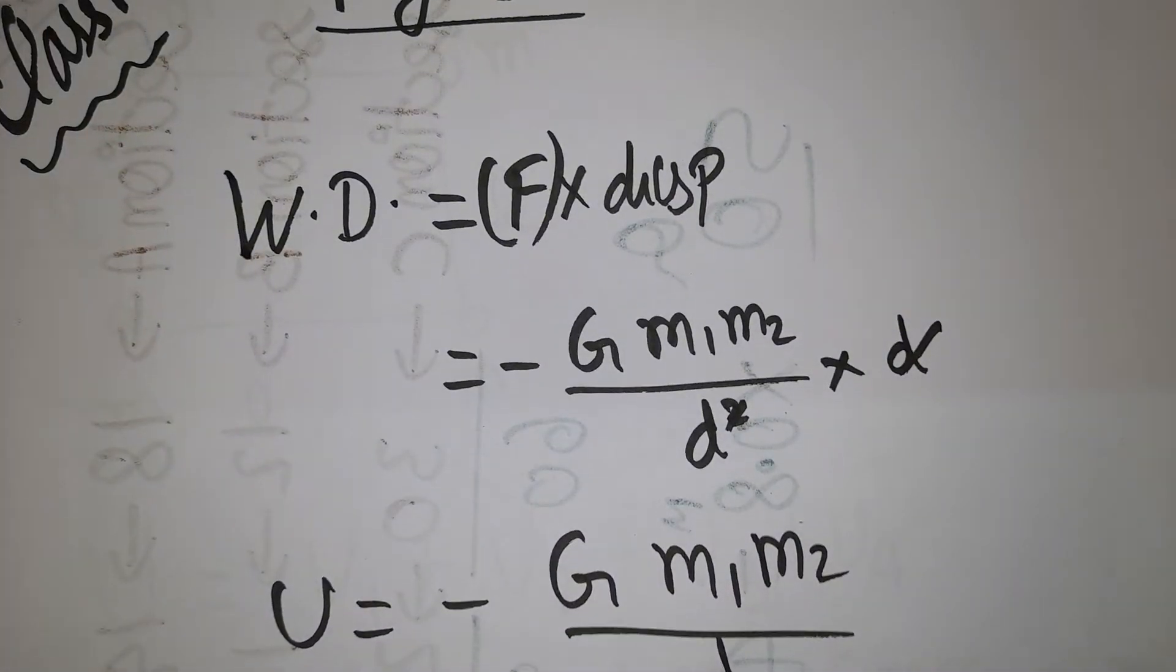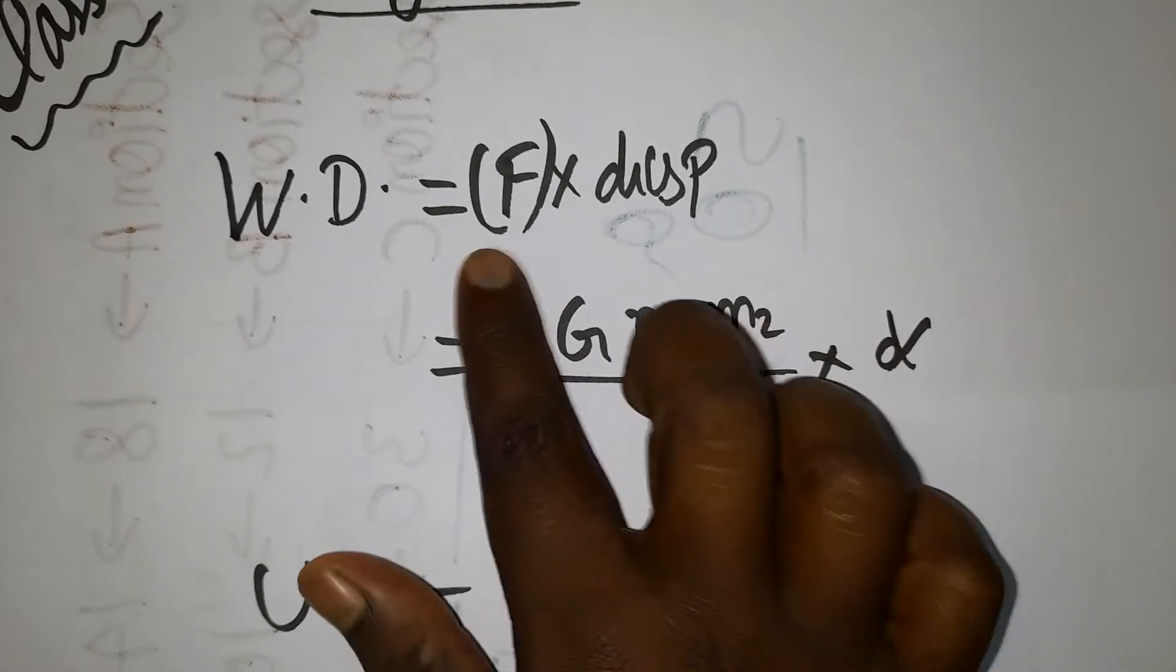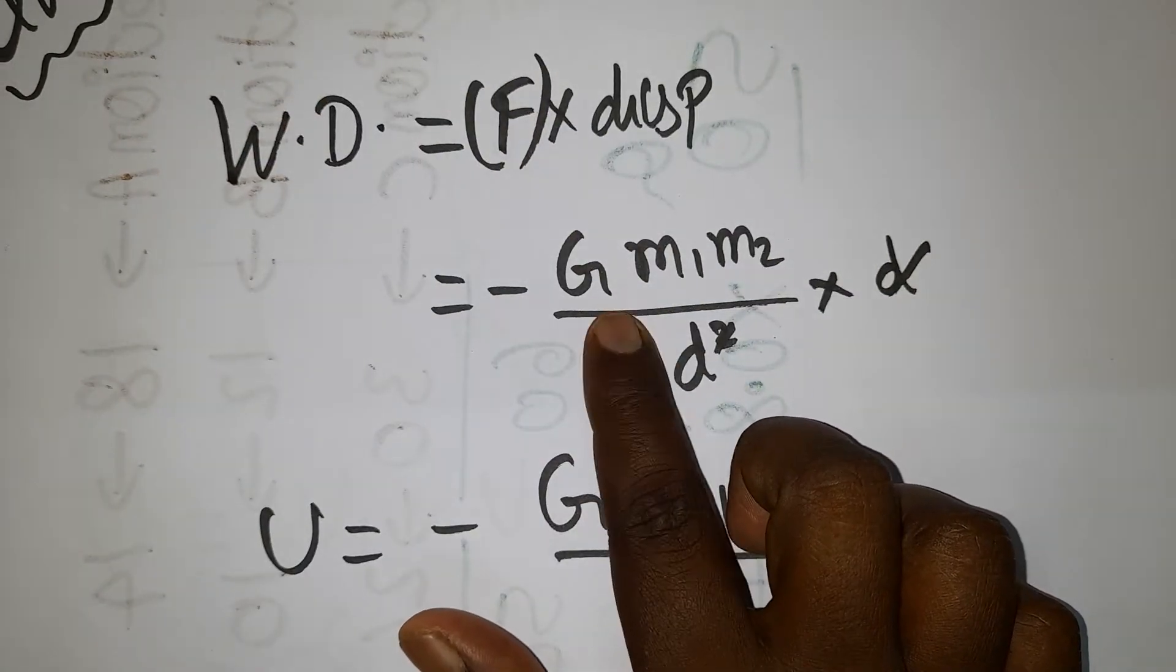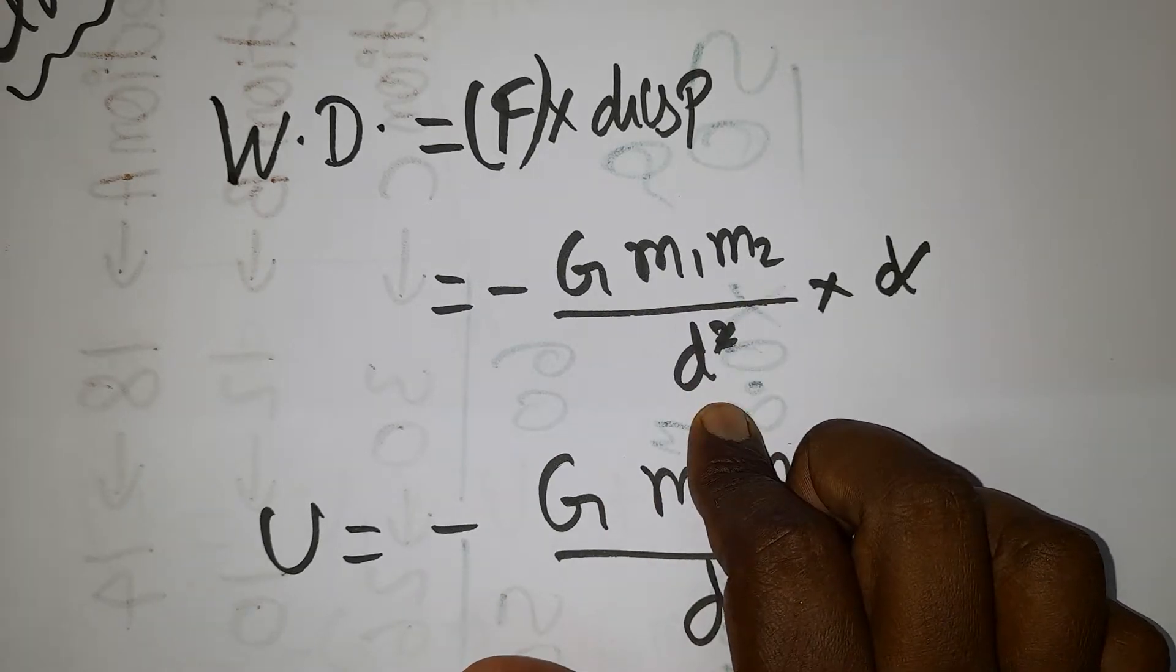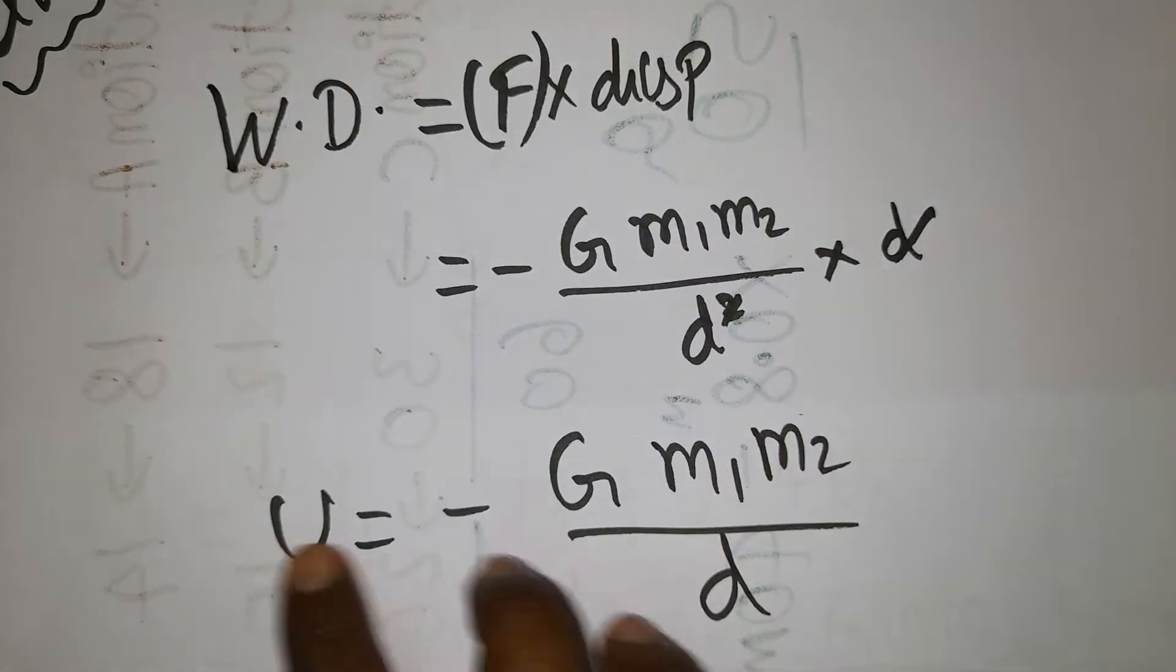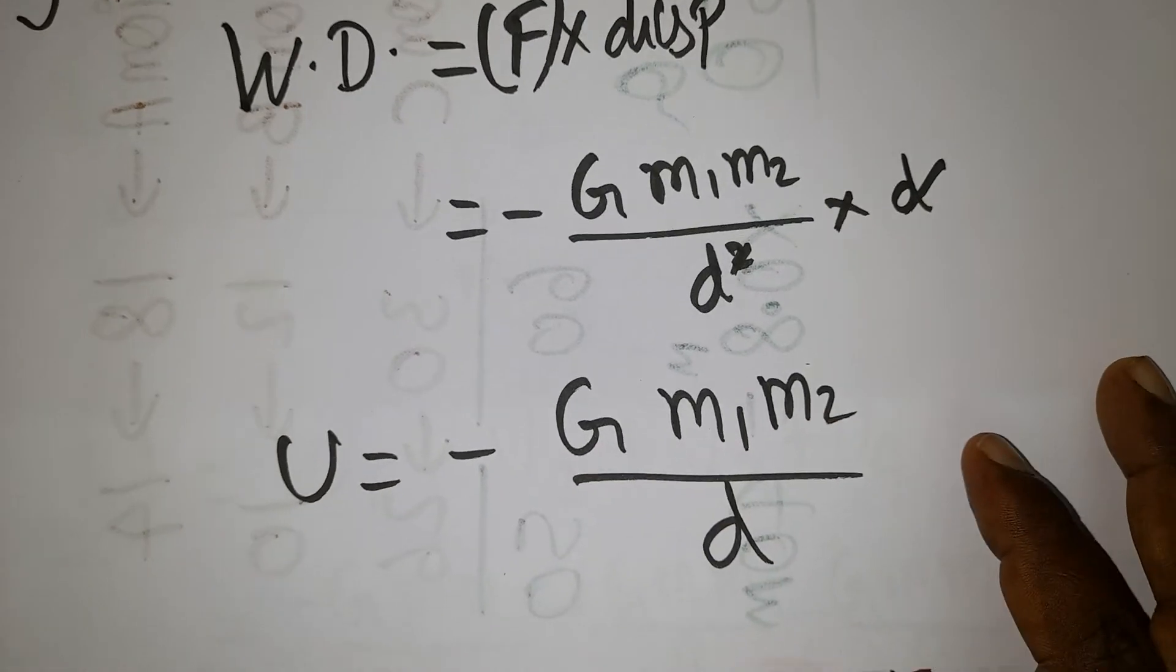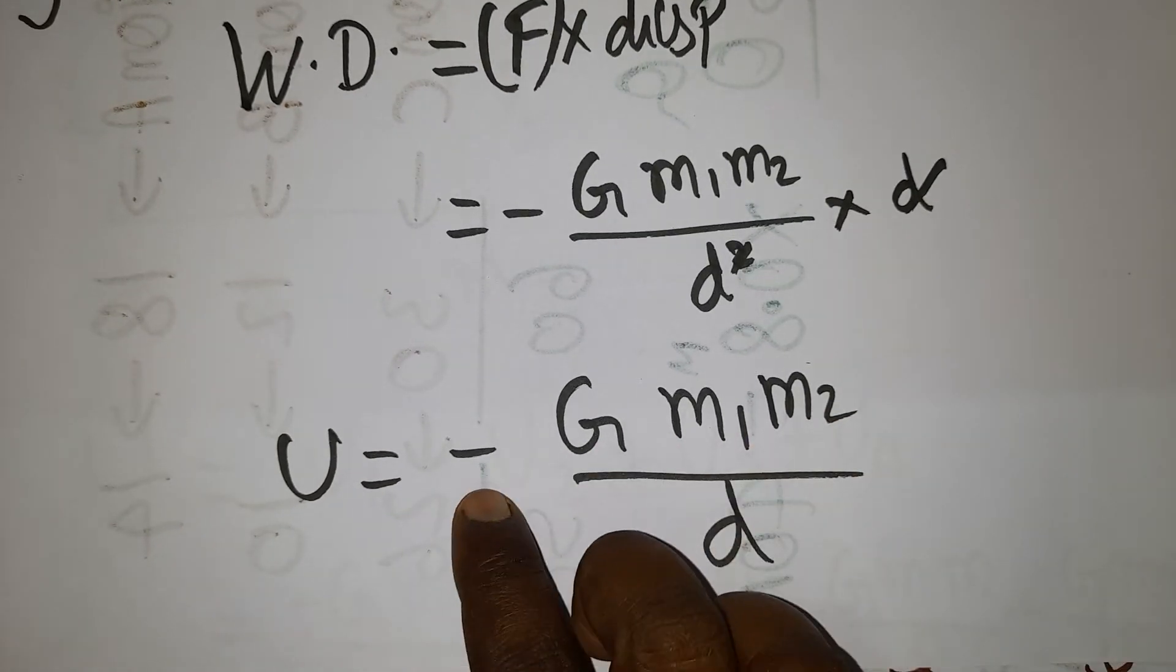First we will find the potential energy formula. Energy equals force into displacement. Here force equals the universal gravitational force G times m1 m2 divided by d square. Distance d gets cancelled - this is a shortcut to get the energy formula. The energy formula will be negative because potential energy is negative.